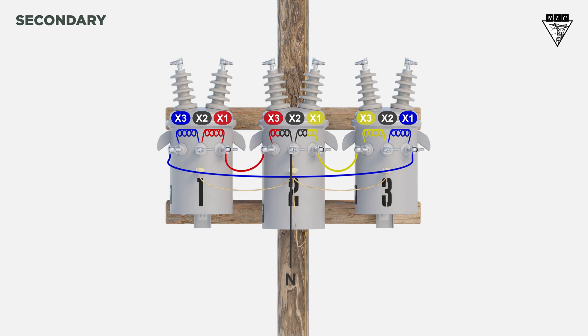To supply power to the customer, you'll run hot legs from the X3 and X1 of the lighter transformer, which has the neutral.